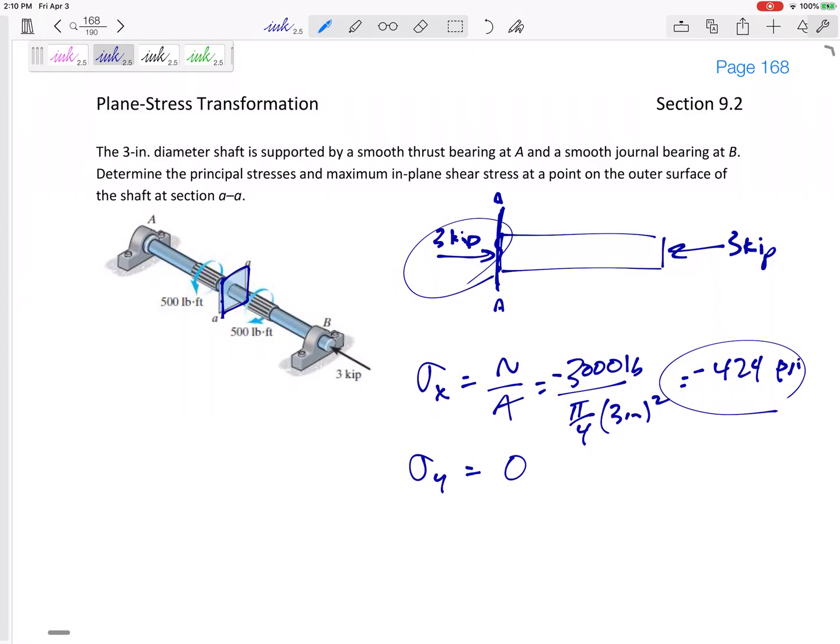Then my tau, generally I would get my tau from VQ over IT, but there is no VQ over IT. But there is torsion. So this is not really a 2D, this is kind of a 3D problem. There's torsion.